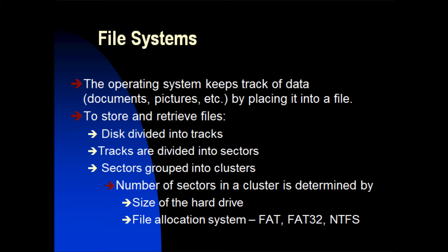The operating system keeps track of data by placing it into a file, helping to store and retrieve files. Disks are divided into tracks, tracks are further divided into sectors, and sectors are grouped into clusters. The number of sectors in a cluster is determined by the size of the hard drive. File allocation systems include FAT16, FAT32, and NTFS.